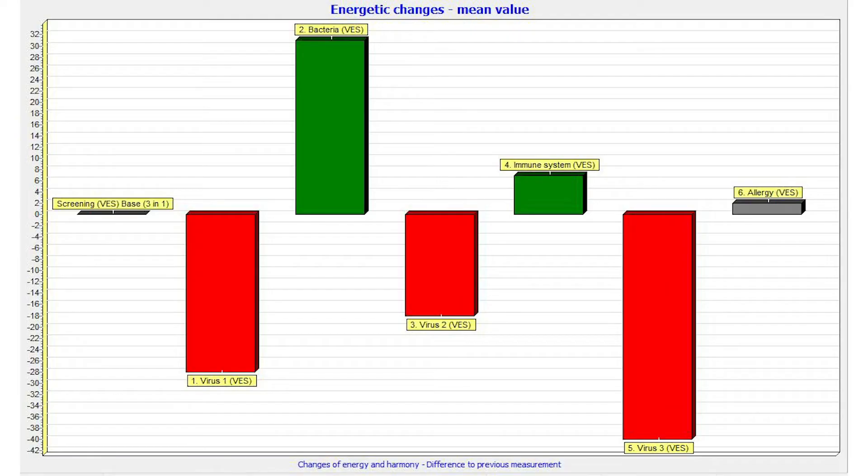When the measurement is completed, you will receive a chart with green and red bars. The green bars are above the baseline and the red bars are below. Referring to the fact that we have stimulated the body with the above mentioned frequencies, red bars represent a negative reaction, which means that the body has no problem with this particular issue.